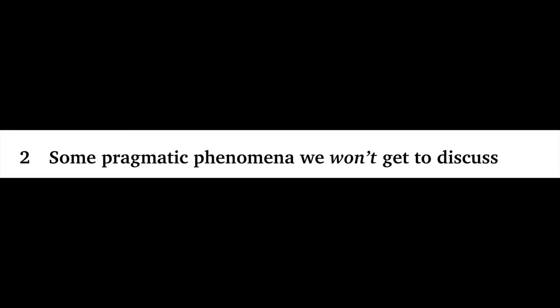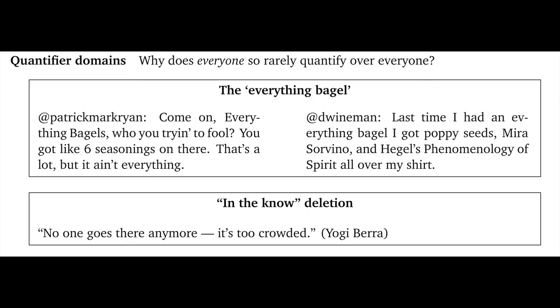By way of wrapping up this introductory screencast, I just want to quickly review some compelling pragmatic phenomena that we unfortunately won't get to discuss in detail in this course. First, quantifier domains. A naive view would be that a quantifier like 'everyone' or 'no one' will quantify over all people, but this is rarely the case. Rather, context is used to refine the domain. If I say 'everyone did well on the quiz,' I clearly mean everyone in this course. If I say 'everyone is back at the car,' I probably mean everyone on the journey with us.